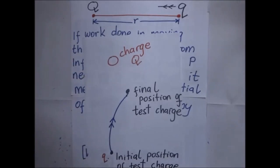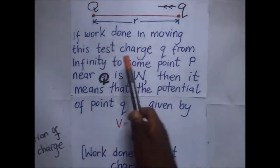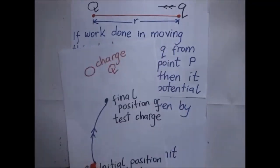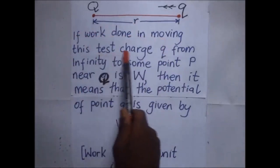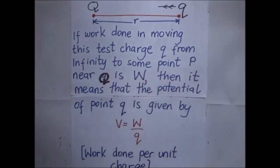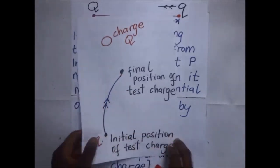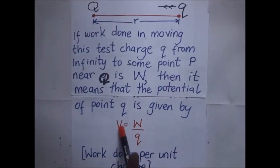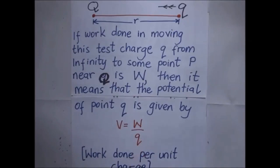Work has to be done to move this test charge from its initial position to point P near Q because of the repulsive forces. If the work done in moving the test charge q from infinity to some point P near Q is W, then the potential at point P is given by work done per unit charge: V = W/q. The SI unit is joules per coulomb, which is equivalent to one volt.